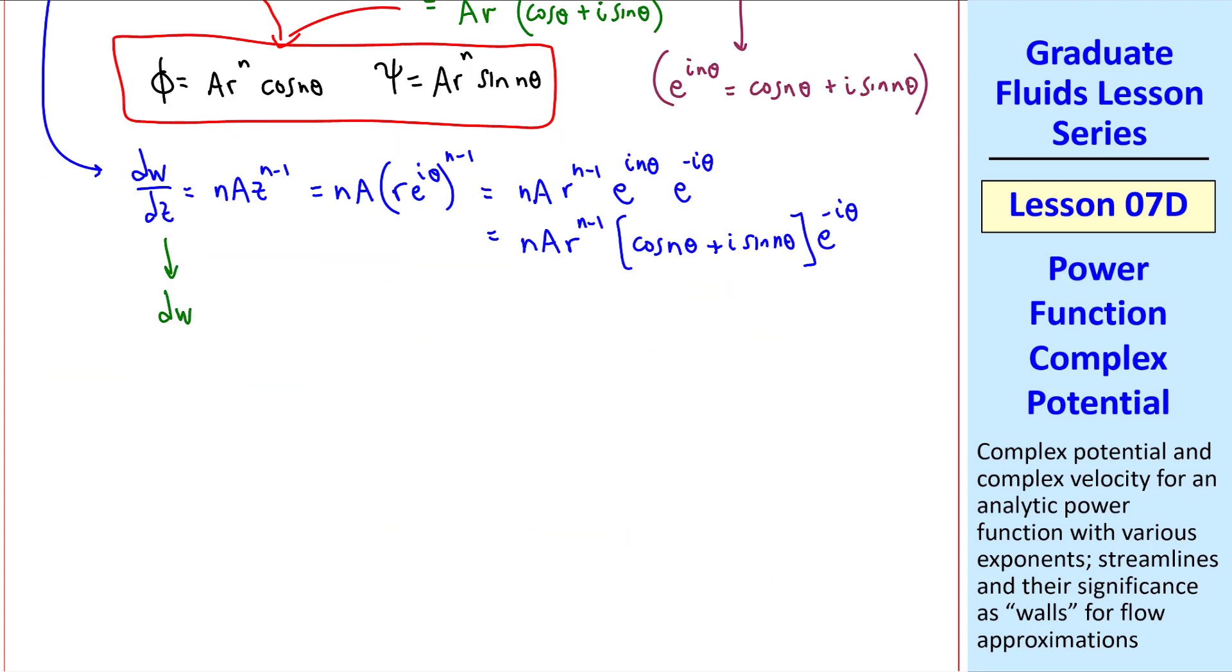But we also know that dw/dz in cylindrical coordinates is u_r minus i u_theta times e to the negative i theta. Comparing these two, u_r equals n a r to the n minus 1 cosine n theta, and u_theta equals minus n a r to the n minus 1 sine n theta. These are the two components of the velocity field for any n in cylindrical coordinates.